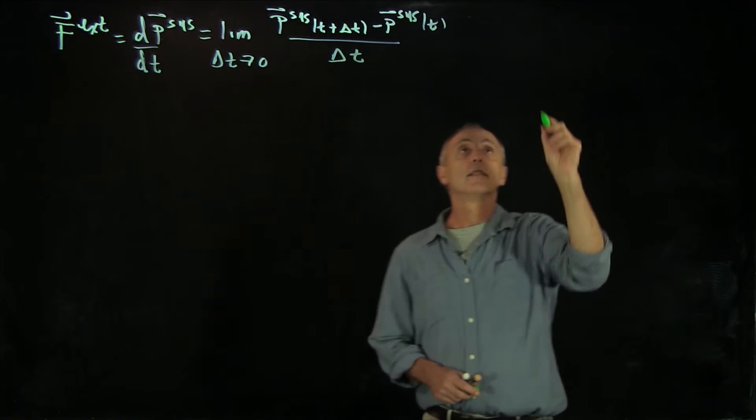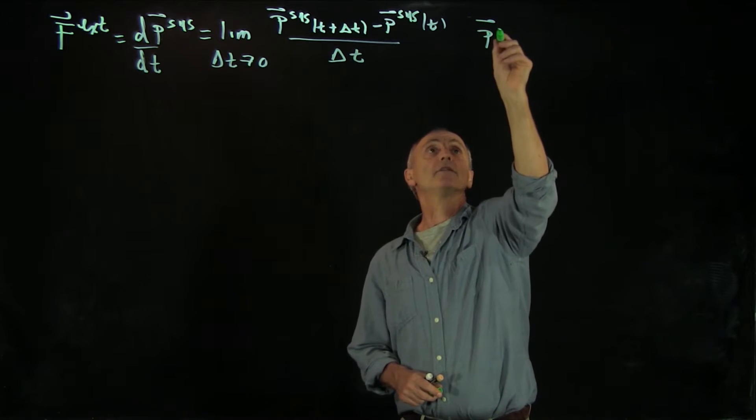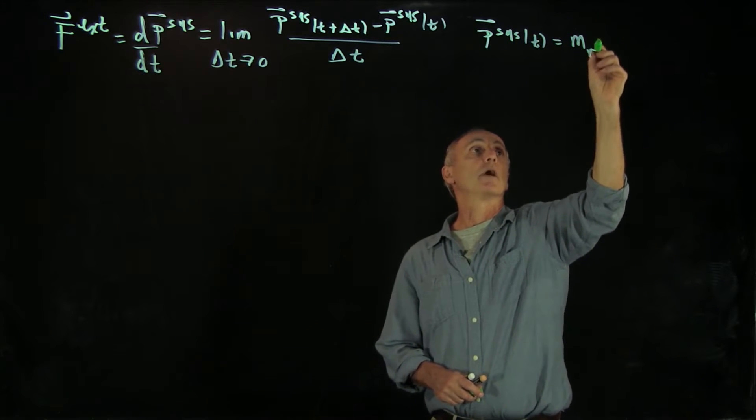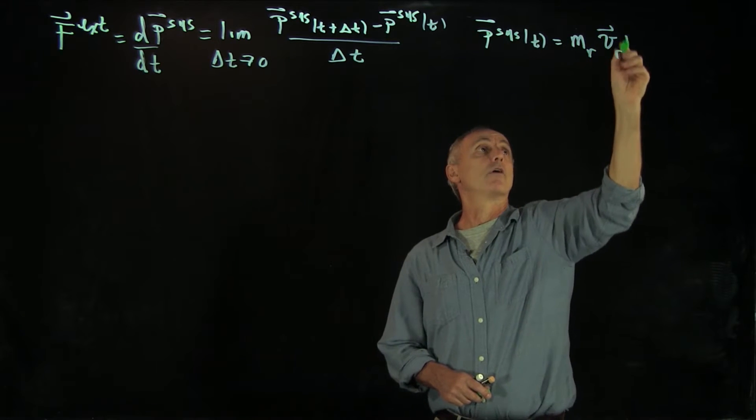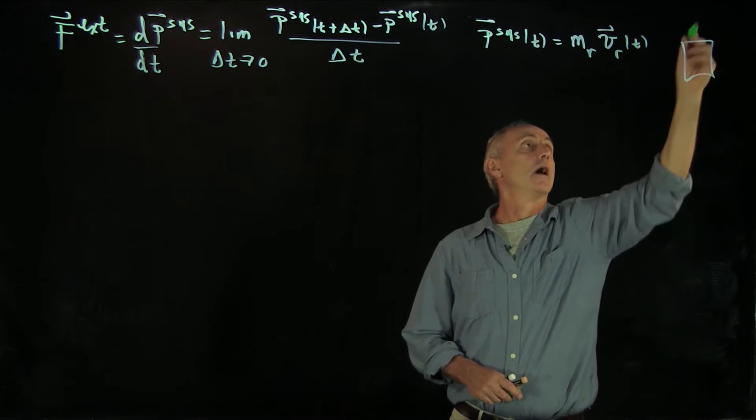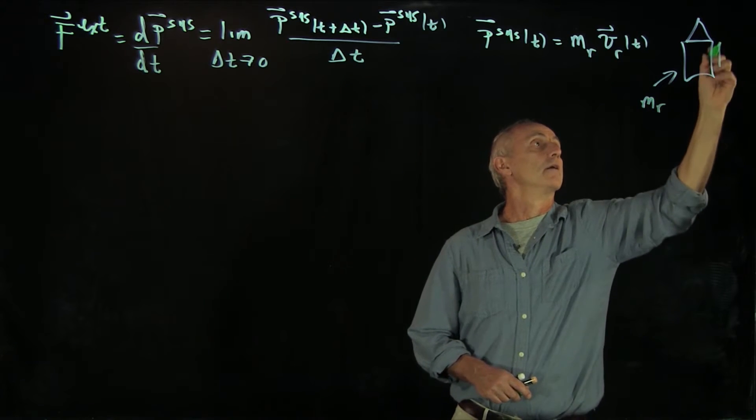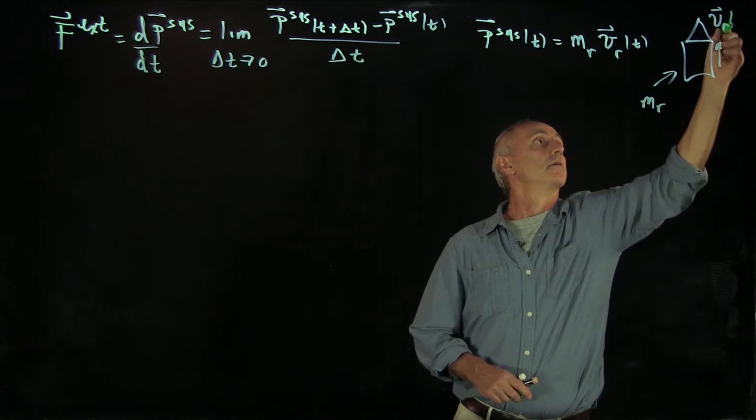Now recall that we had the momentum of the system at time t was the mass of the rocket times v bar of the rocket at t. I'll just quickly show mass of the rocket, vr of t.